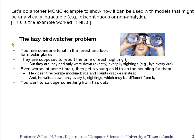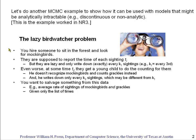You want to salvage something from this totally messed up data. You'd like to know the average rate of sightings of mockingbirds and of grackles. You're given only the list of times — you don't know who wrote the times, you don't know what the integers k1 and k2 are, nor do you know t_c, the critical time when the observer was replaced by the child.